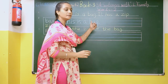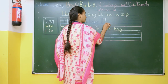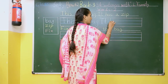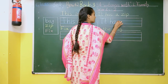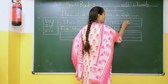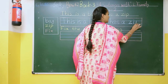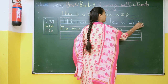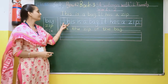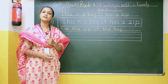This is a bag. Full stop. After that there is a new sentence. I capital, T small. Keep one finger distance and write H-A-S, has. Keep one finger distance and write A. Then keep one finger distance and write Z-I-P, zip. This is a bag. It has a zip.